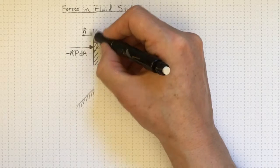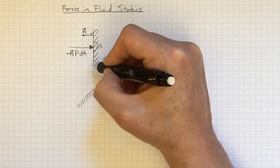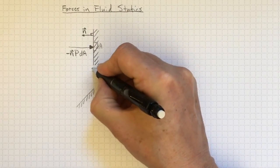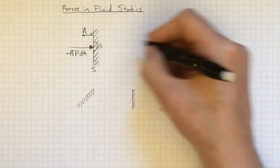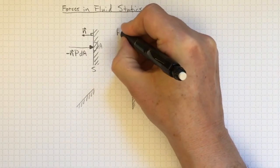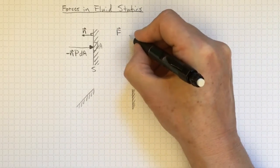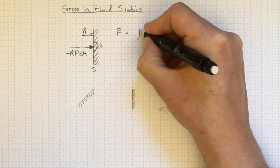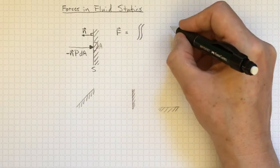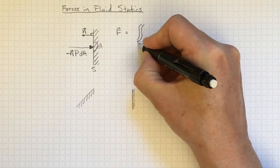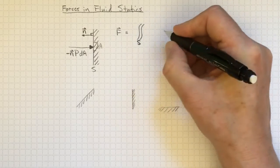Now if I want to get the total force over the entire area, then I'm going to have to integrate over this whole surface S. And I'll get that the total vector force is equal to the integral, it's a double integral because it's over area, over the surface S, the whole surface that I'm interested in.